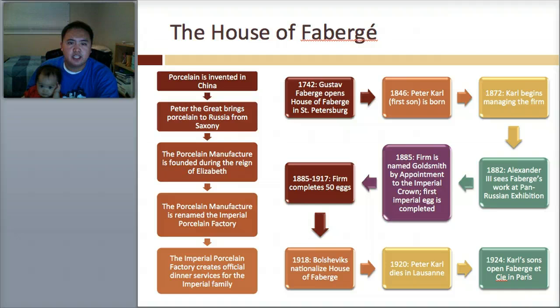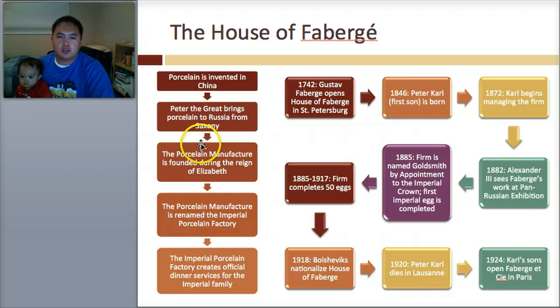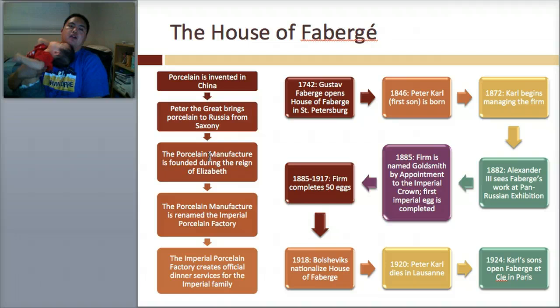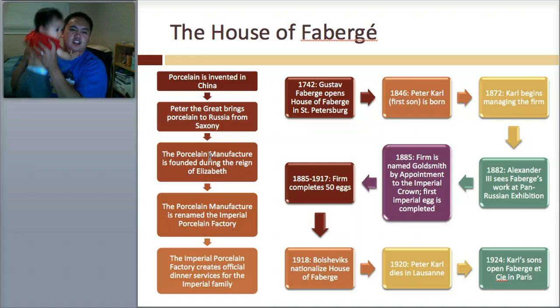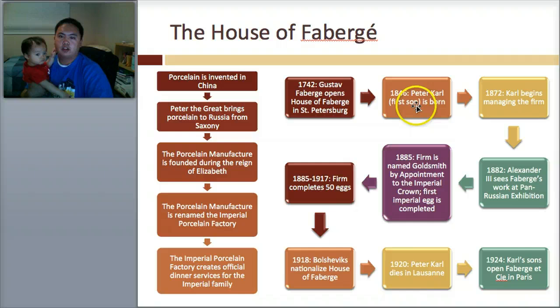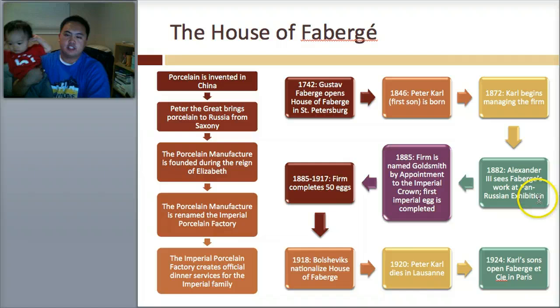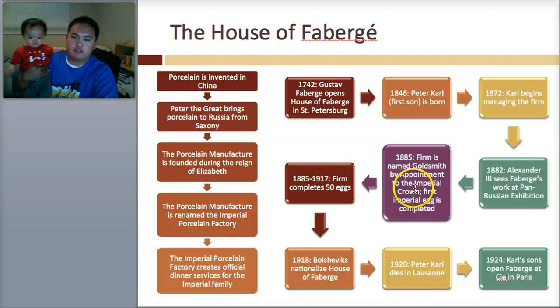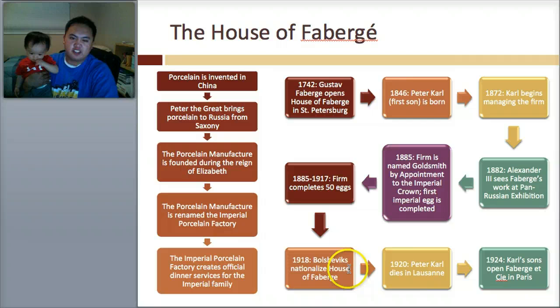Here's the history of the Fabergé egg. First of all, porcelain is a Chinese thing — Peter the Great brings it to Russia. The porcelain manufacturer is founded during the reign of Elizabeth, and during this imperial reign they rename it the Imperial Porcelain Factory. The porcelain factory creates dinnerware for the imperial family. In 1742, the house of Fabergé opens in St. Petersburg. His first son manages the firm. Alexander oversees the work, the firm is named Goldsmith by appointment by the imperial crown, and the first imperial egg is commissioned and completed. They ultimately complete 50 eggs. The Bolsheviks nationalize the house of Fabergé, Peter Karl dies, and then his sons open one in Paris.